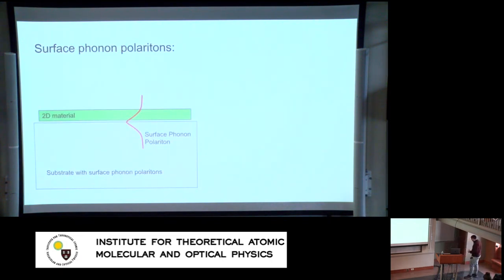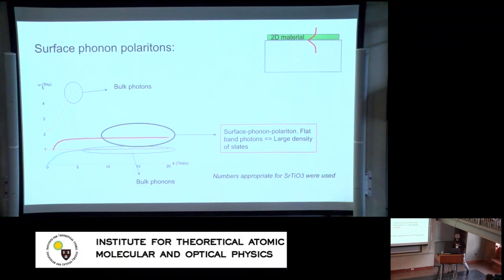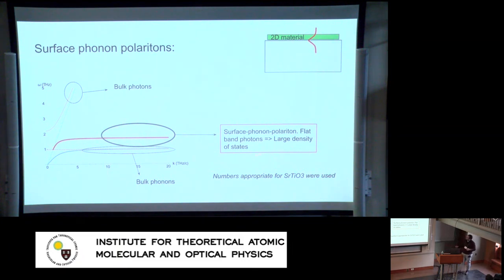Now I want to introduce a new type of cavity-matter hybrid: surface phonon polaritons. The idea is that you have a para-electric with a strong polar phonon, which you place on top of a 2D material. This 2D material then strongly interfaces with surface phonon polaritons. The para-electric is described by the permittivity of a single IR-active phonon, leading to an upper and lower polariton with a Reststrahlen band in the middle — a flat band of surface phonon polaritons extending to very high momenta, half photon and half phonon.